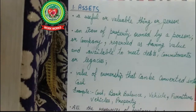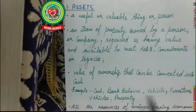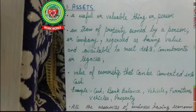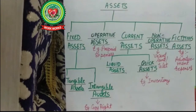A legacy refers to persons who die without a legal heir — for example, someone who has no son or daughter, so their property goes to a trust. That is an asset for the government, called a legacy. Assets can be cash, bank balance, vehicles, furniture, or property. All resources of a business having economic value are called assets. These resources help the business earn a profit and have future value. Assets are always property and are important for running a business.